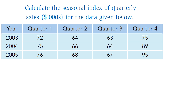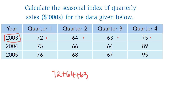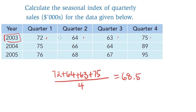The first step is to calculate the yearly averages. Here we have some data, and for 2003, in the first quarter we had 72, then 64, then 63, then 75. To find the average, I add everything up and divide by how many I have: 72 plus 64 plus 63 plus 75 divided by 4, and I get 68.5. So that is the average for 2003.